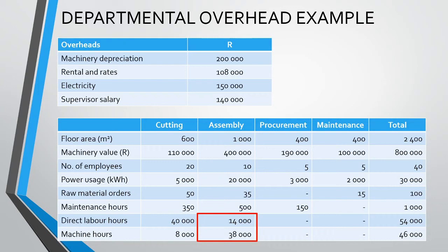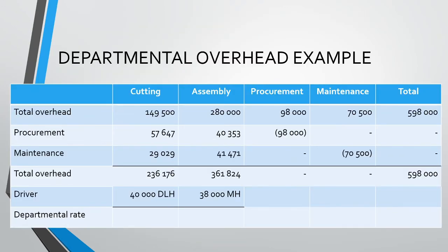We can now fill in our cost drivers in our table and divide our total overheads for each department by the cost driver to arrive at separate overhead rates. For cutting, we have R5.90 per direct labor hour — applied only to the product's labor hours in the cutting department. For assembly, the overhead rate is R9.52 per machine hour — applied only to the product's machine hours in the assembly department.